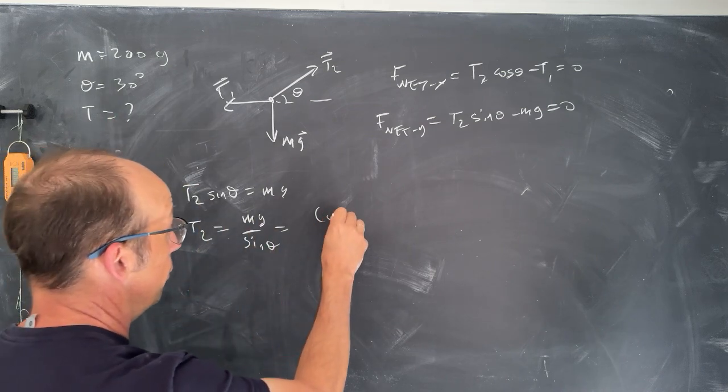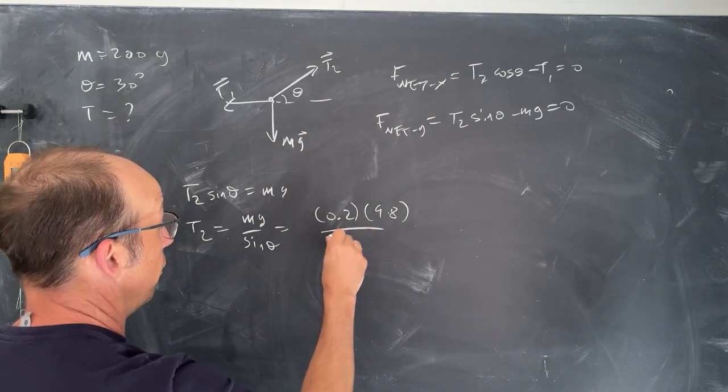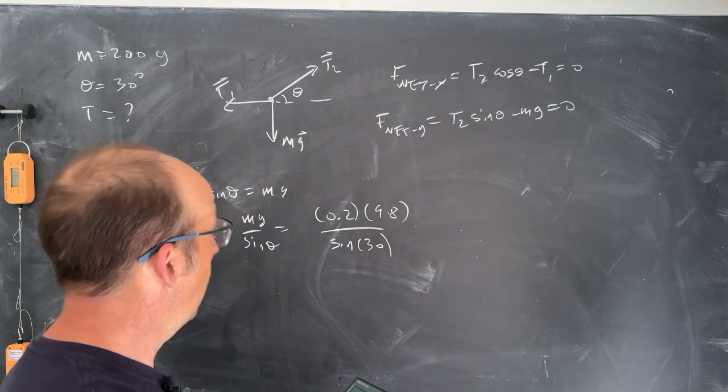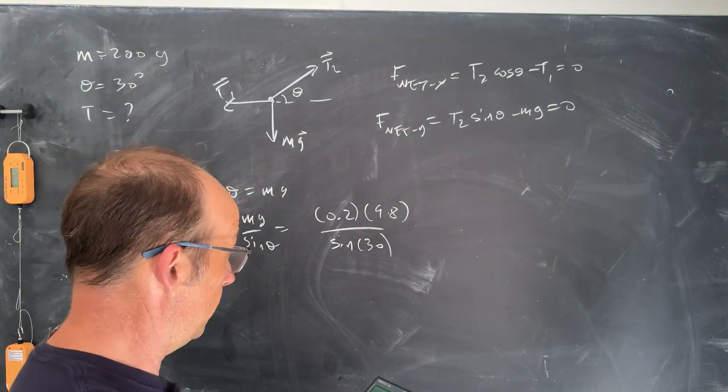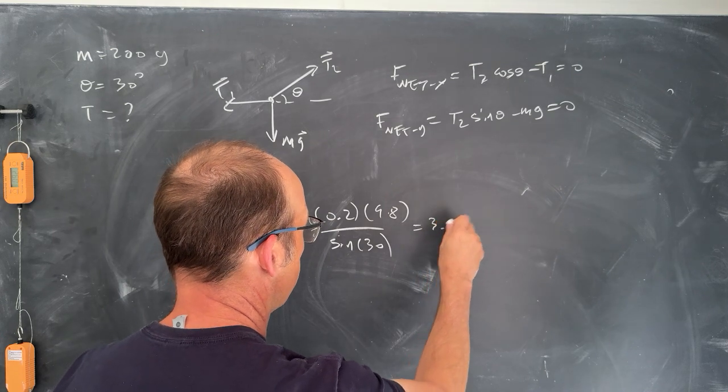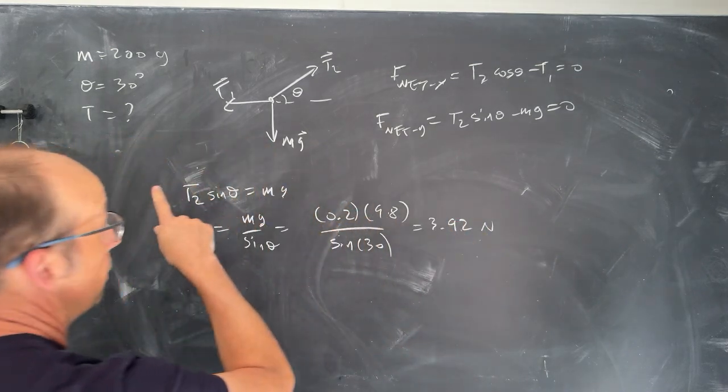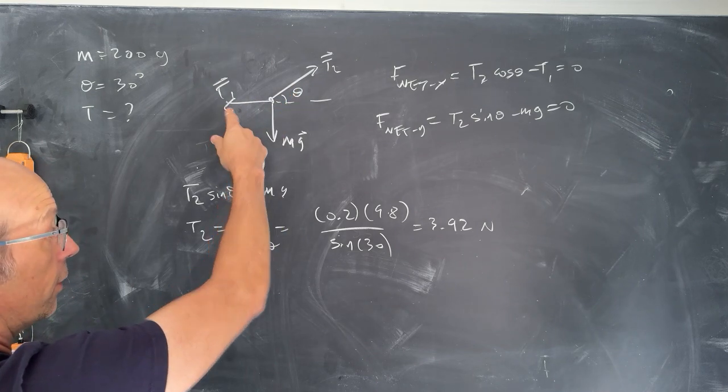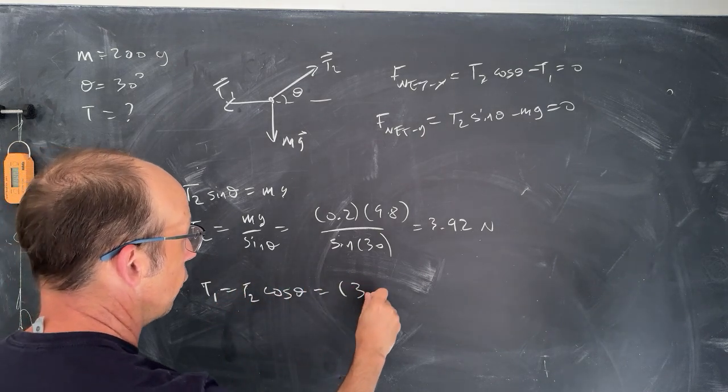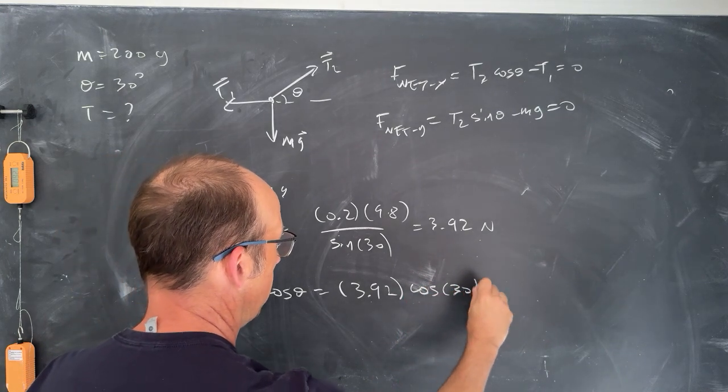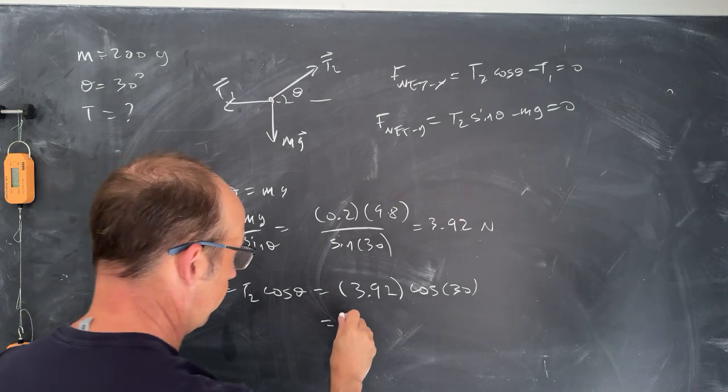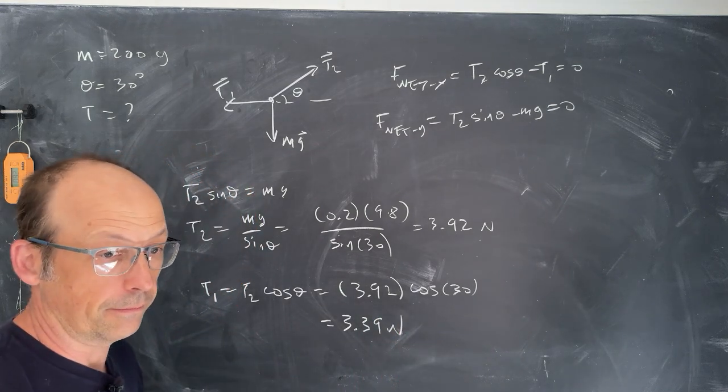So t2 sine of theta equals mg. t2 equals mg over sine of theta. Let's just put in our numbers. I used 200 grams. So 0.2 kilograms, 9.8 newtons per kilogram, sine of 30. So let's plug that into my calculator. 0.2 times 9.8 divided by sine 30. So I get 3.92 newtons as t2. Now I can go over here and solve for t1. t1 is t2 cosine theta. So that's going to be 3.92 cosine of 30, and I get 3.39. So there you go. So that's a better problem.